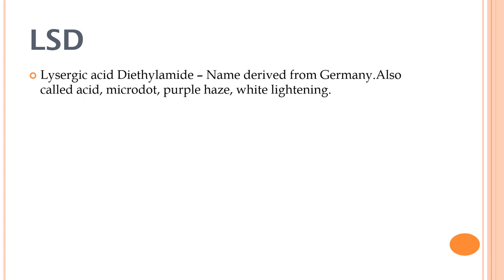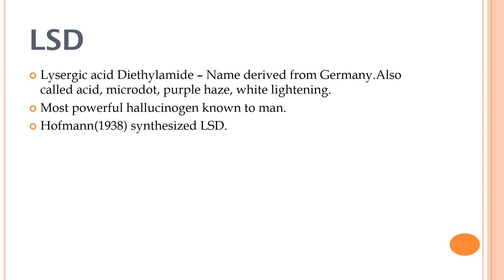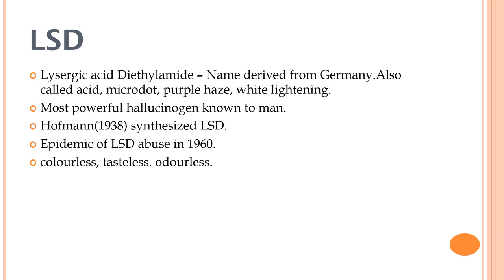Regarding LSD — lysergic acid diethylamide — the name is derived from German. It is also called acid, microdot, purple haze, and white lightning. LSD is the most powerful hallucinogen known to man. Hoffman synthesized LSD in 1938, and epidemic LSD abuse was noticed around 1960. The physical properties: LSD is a colorless, tasteless, and odorless substance and is a semi-synthetic compound.